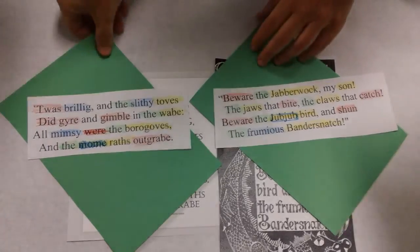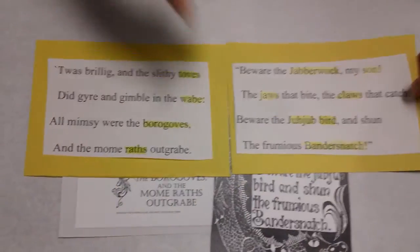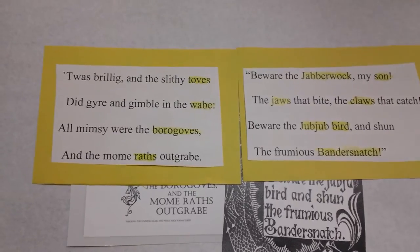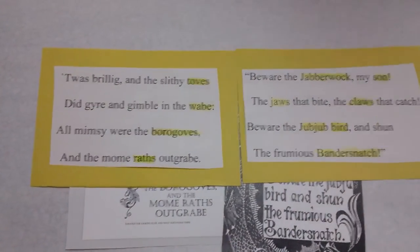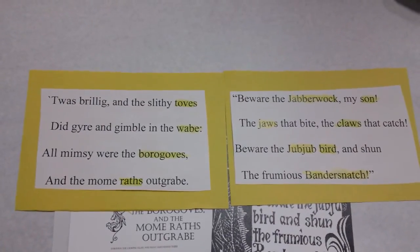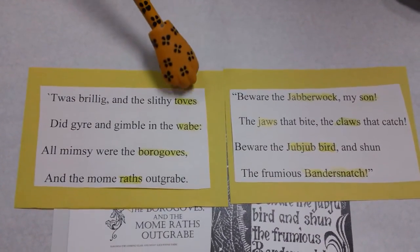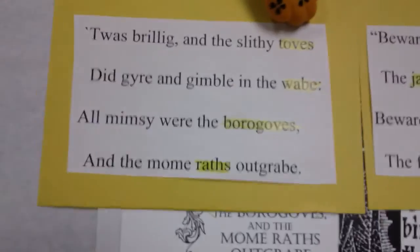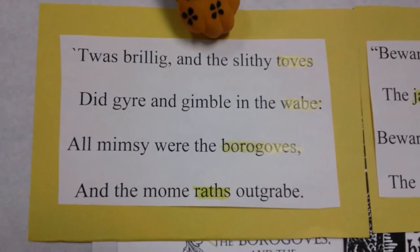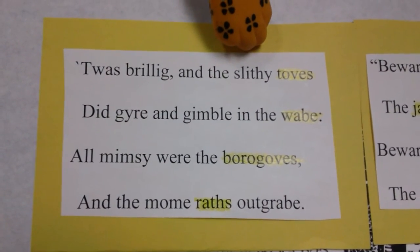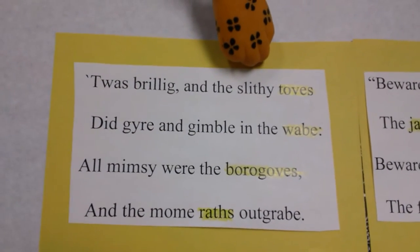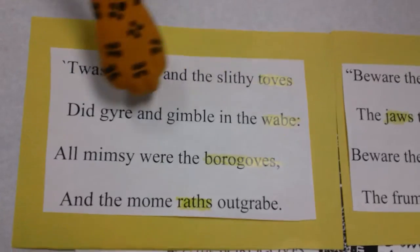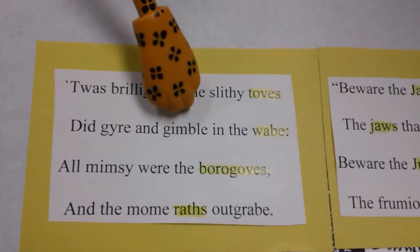First, let's look for nouns. A noun is a person, place, thing, or idea. We can tell when something is a noun by looking for noun identifiers, such as articles and other modifiers. For example, how do we know toves is a noun? We notice the article the. Do not be confused by the adjective interrupter, slithy. Another way we know toves is a noun is because it comes before the verb phrase did gyre and gimble.